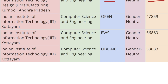Next we also have data for IIIT Kurnool, Andhra Pradesh. For Open category the cutoff rank is 47,859, for EWS category the cutoff rank is 56,869, and for OBC-CL the cutoff rank is 59,833. This is the cutoff rank for IIIT Kurnool Andhra Pradesh for CSAB Round One counseling.